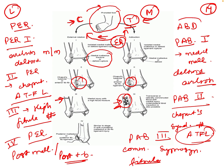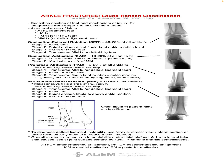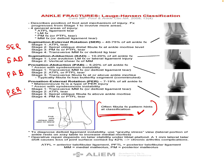In summary: pronation-abduction has three types of injury and pronation-external rotation has four types. There are four categories overall. It is the fibular fracture pattern that hints at the classification, because the type of fibular fracture differs across all four categories. In supination we have supination-external rotation and supination-adduction; in pronation we have pronation-abduction and pronation-external rotation.